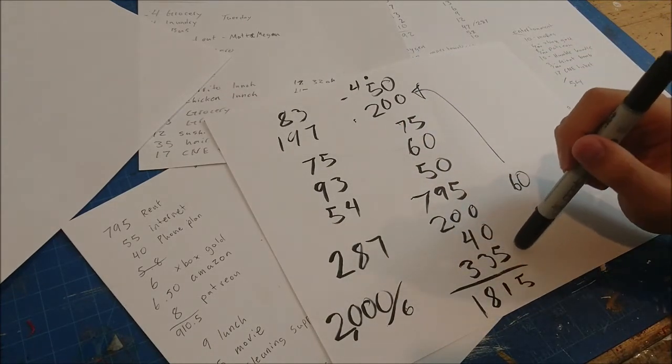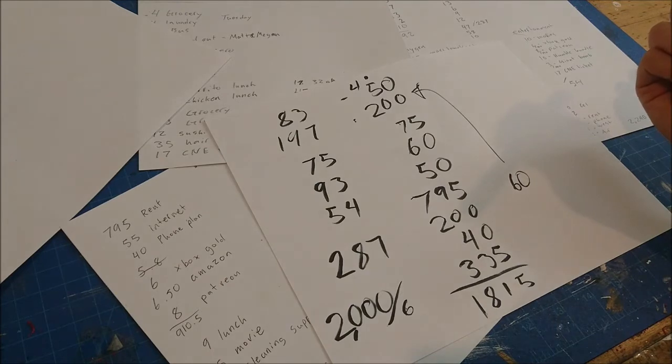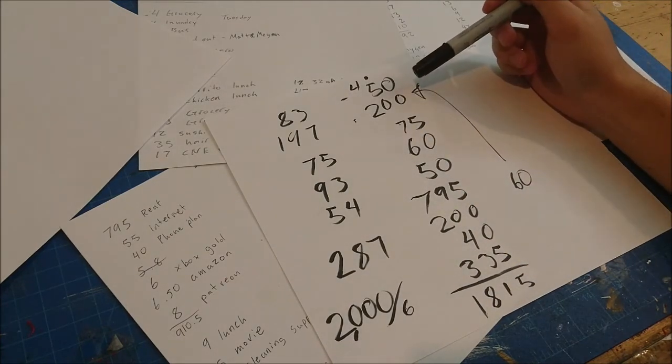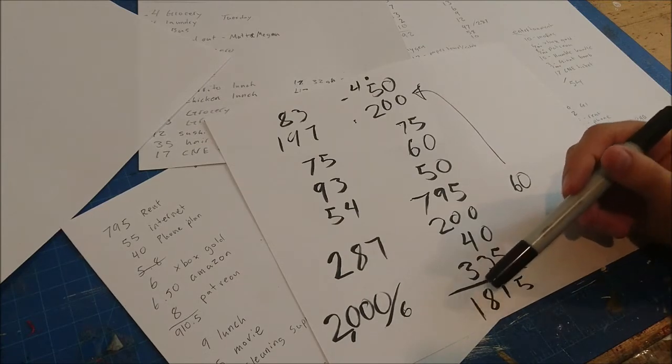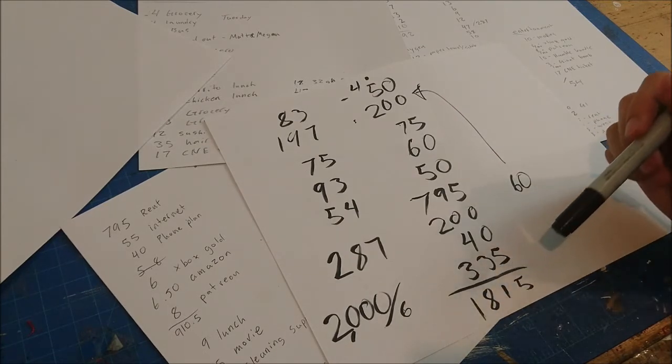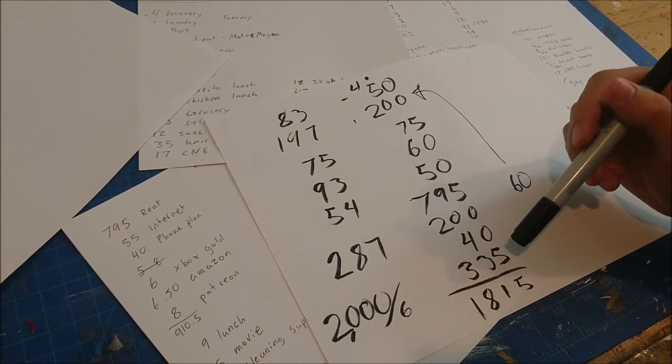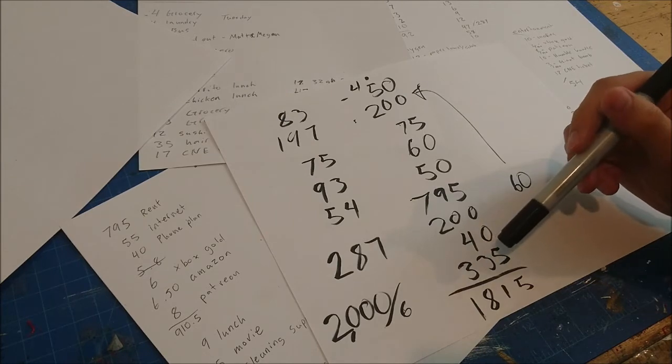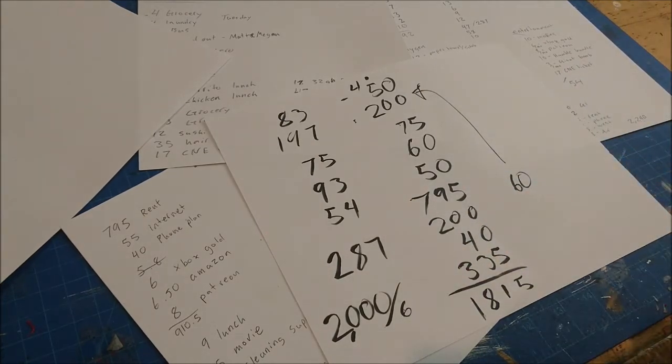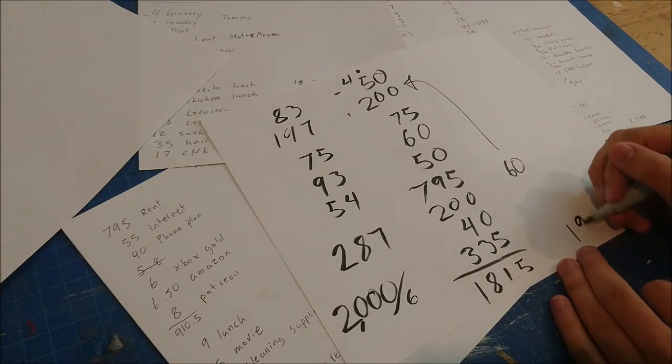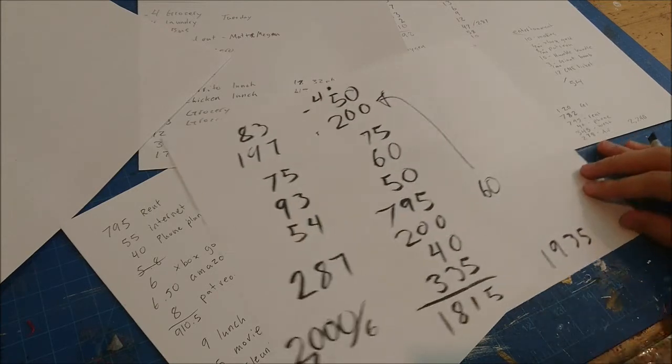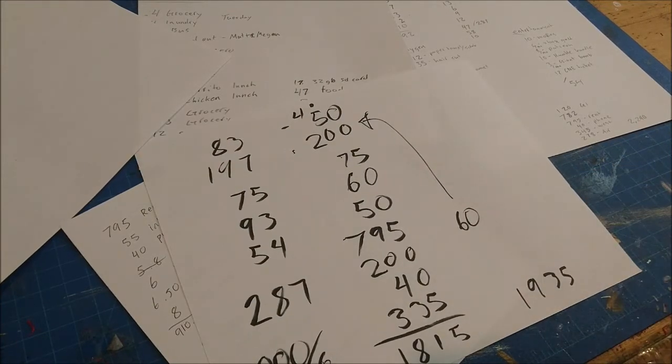So when you add up all of that, my monthly expense would be $1,815 except I also forgot the 120, or yeah 120 for the G1. So yeah, it's more like $1,935 so basically like $2,000 a month is my current expenses.